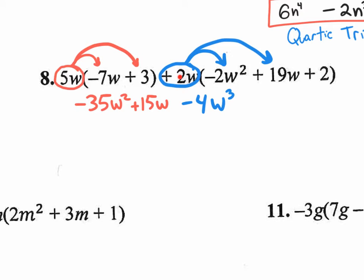Now let me distribute 2w to the 19w. And again, the coefficient 2 times the coefficient 19, that's going to give you 38, a positive 38. And then when you go w times w, that will be w squared. And last but not least, 2w times 2, just multiply the coefficient 2 with that number 2 and you will get positive 4 with a w because the w times there is no w, it just comes down. That's your answer so far. That's only after distributing.